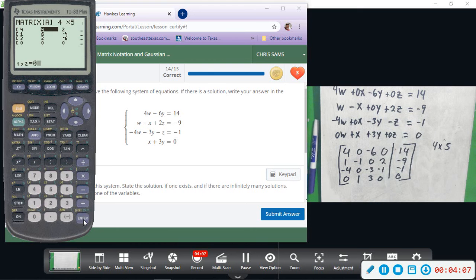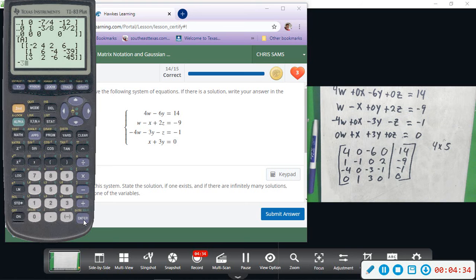4, enter, 0, enter, negative 6, enter, 0, enter, and then 14. So that's row 1. Now row 2 is 1, enter, negative 1, 0, 2, and then negative 9. Negative 4, 0, negative 3, and then negative 1.